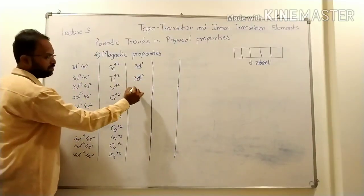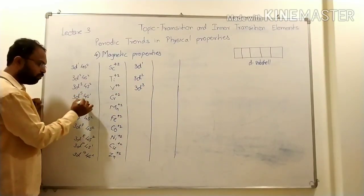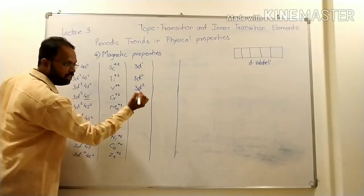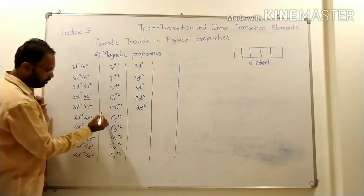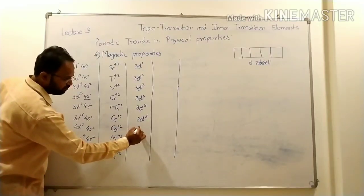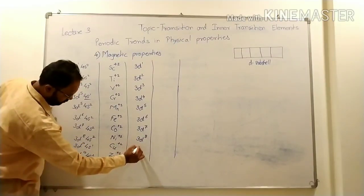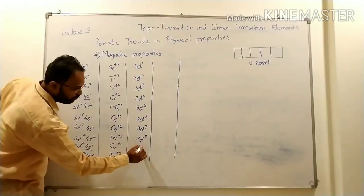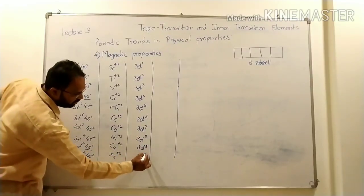For vanadium, remaining configuration is 3D3. For chromium, one electron removed from 4S and one electron removed from 3D5, so remaining electron configuration is 3D4. For manganese, 3D5. Iron is 3D6. Cobalt is 3D7. Nickel is 3D8. For copper, one electron from 4S and one from 3D10 are removed, so remaining is 3D9. And last, zinc, that is 3D10.